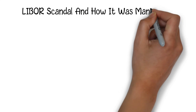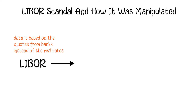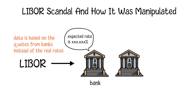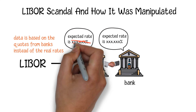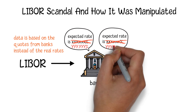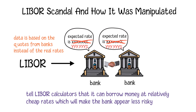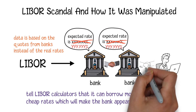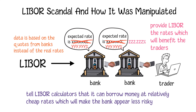Due to the fact that the data is based on quotes from banks rather than real rates, there is a chance that major banks may allegedly collude to manipulate LIBOR rates in their own favor. The famous LIBOR scandal, reported in the Wall Street Journal in 2008, indicated that some major banks deliberately submitted low LIBOR rates to appear less risky and attract more business. Those banks also worked with swaps traders to provide LIBOR rates that would benefit the traders instead of the real rates the banks would actually pay.